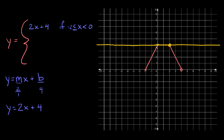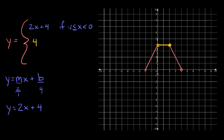So if we didn't put limits on this line, you can see it would basically just run right through here. This line runs through the number four, so this graph is simply y equals positive four. Now obviously this line does not run across the entire graph — it specifically goes from x equals zero and then stops at x equals positive two.